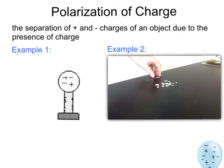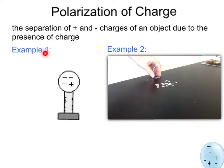Polarization of charge. This is simply the separation of positive and negative charges of an object due to the presence of charge. In example one, we see a metal sphere on an insulating stand and this sphere is neutral — we can tell because there are two positive charges and two negative charges.